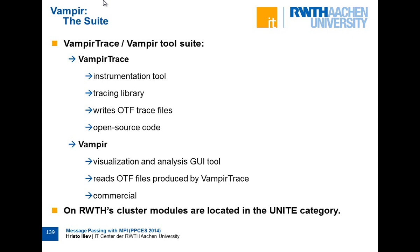Vampyr comes with VampyrTrace, which is a library — a tool you can use to instrument your program. Once the program is instrumented and you run it, it generates something called a trace. The trace is a collection of events like sending data, receiving data, calling MPI send or MPI receive, function calls, and so on. All these events are collected and written to a file called an OTF file, or OpenTrace Format. VampyrTrace itself is open source, so you can download it, compile it, and generate traces.